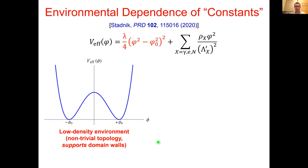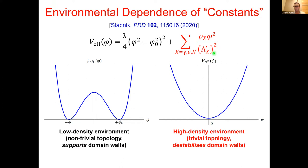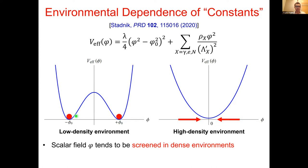In a low-density environment or with sufficiently feeble interaction, the dominant term in the effective potential is the bare quartic term — giving two topologically distinct vacua supporting domain wall production and propagation. On the other hand, in a high-density environment or with sufficiently strong interactions, the matter-induced term dominates, giving rise to a differently shaped potential with only a single unique minimum, supporting only trivial topology and tending to destabilize or destroy the domain walls altogether.